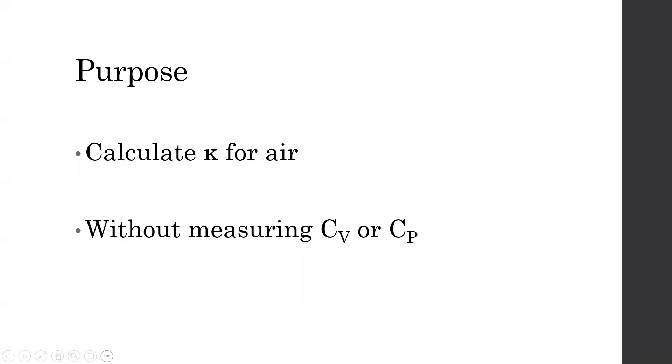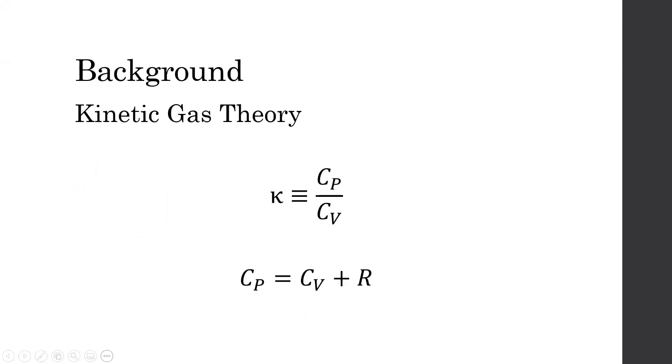The purpose of this experiment is to calculate the adiabatic exponent for ideal gases, kappa, for air. We want to do this without measuring any of the specific heat capacities of air because, through the kinetic gas theory, kappa is defined as the specific heat capacity at constant pressure, Cp, divided by the specific heat capacity at constant volume, Cv, where Cp is equal to Cv plus the universal gas constant R.